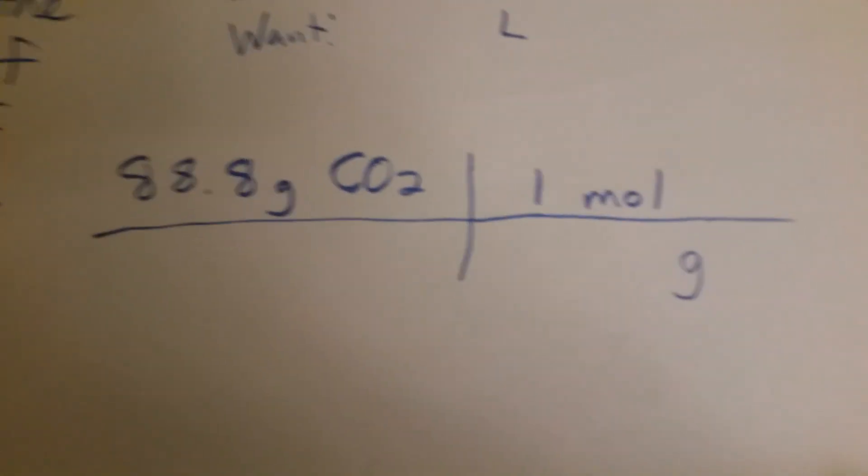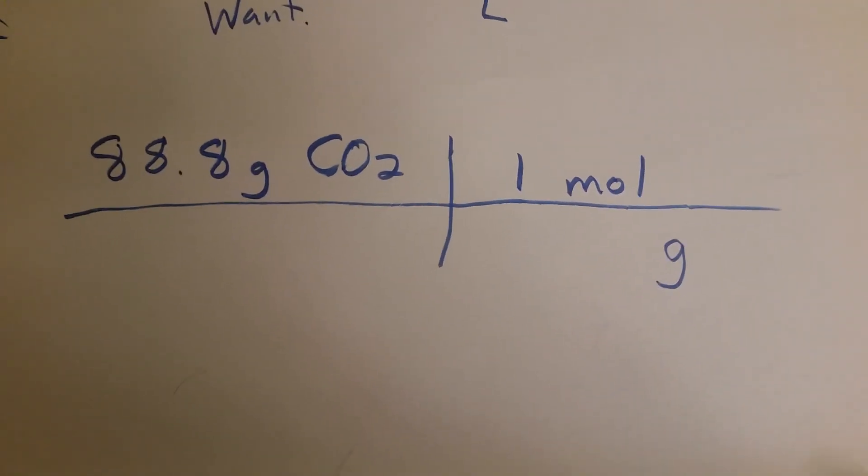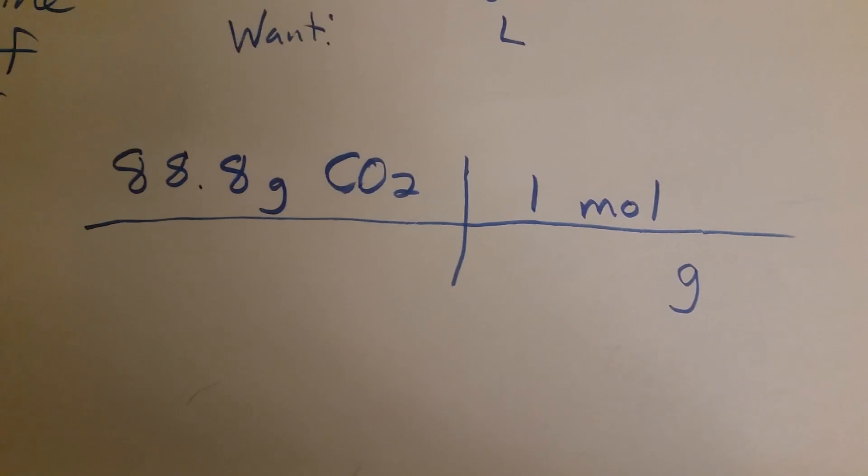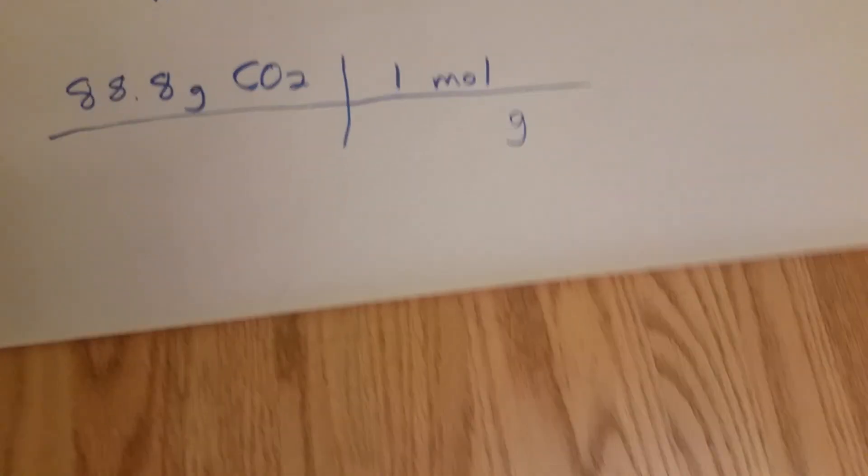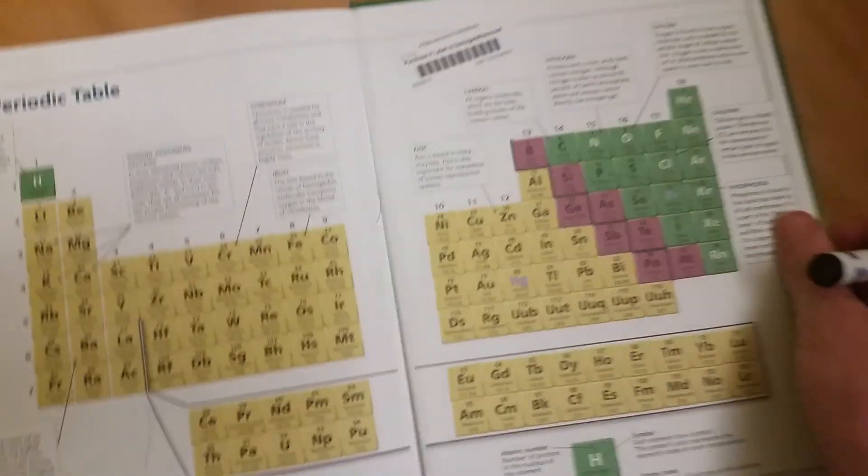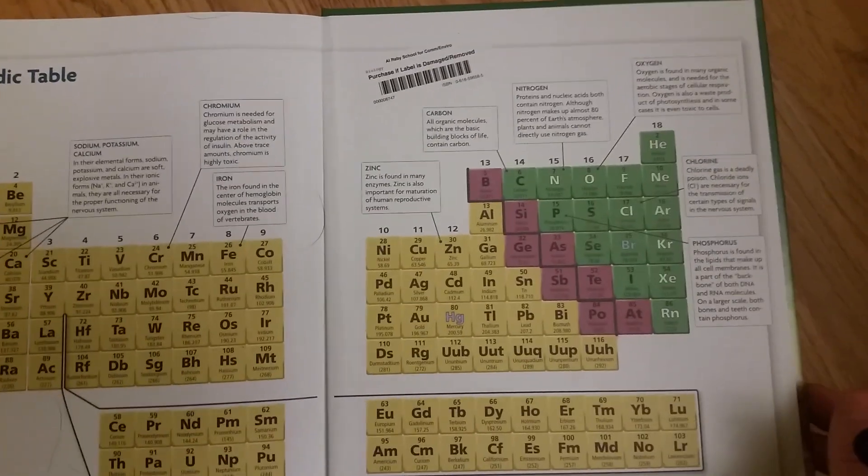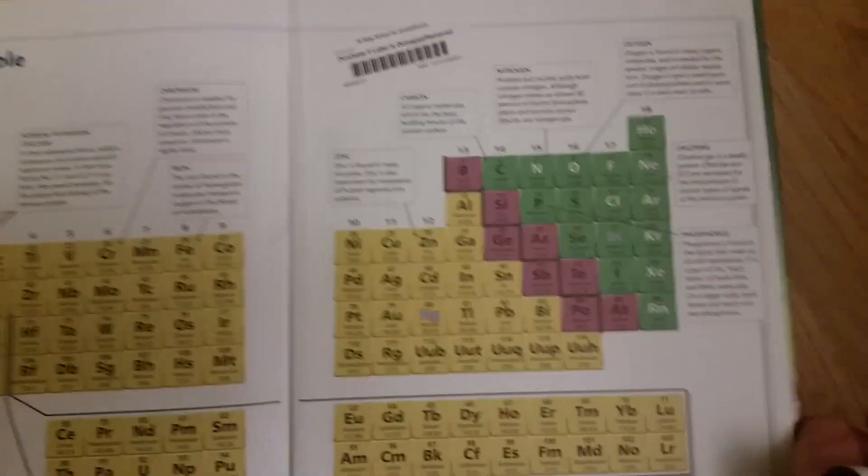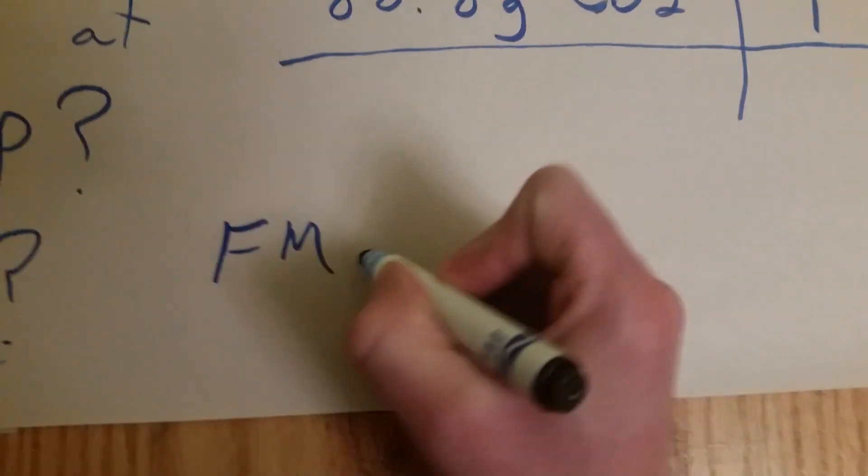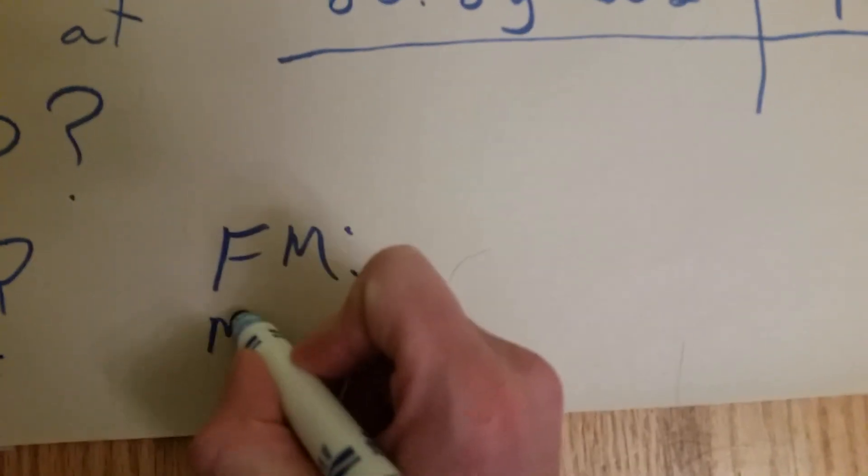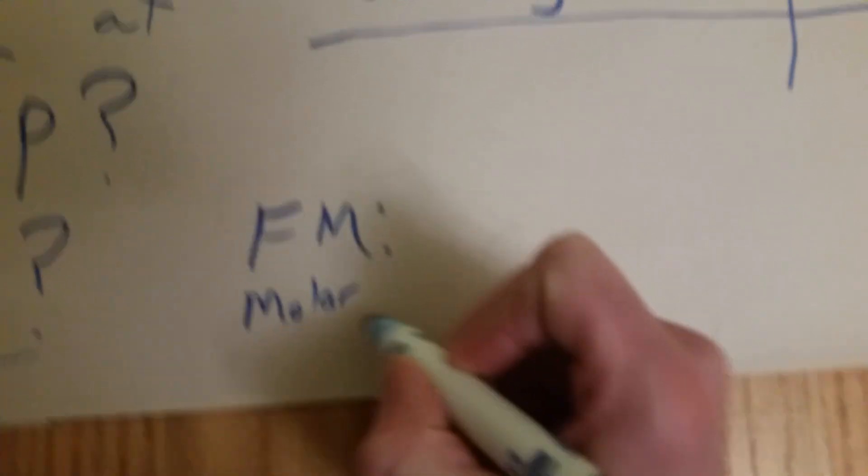So we're going to go grams into one mole. And how do we figure out how to go from grams of CO2 to the mole? Oh yeah, we use our handy dandy tool. Our favorite friend, the periodic table. So we've got CO2. We'll probably use formula mass or molar mass.